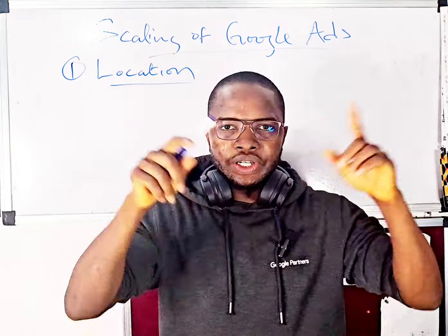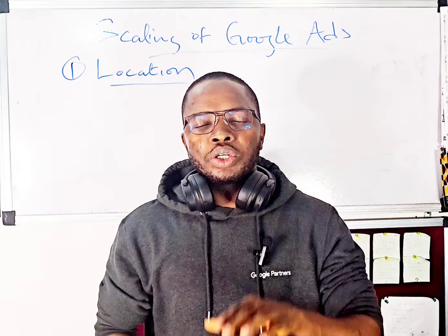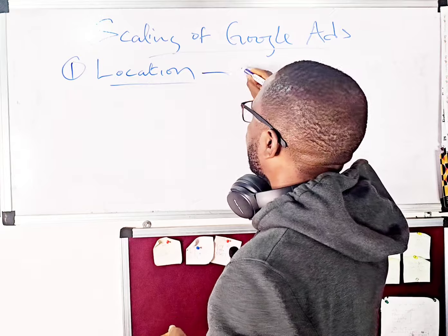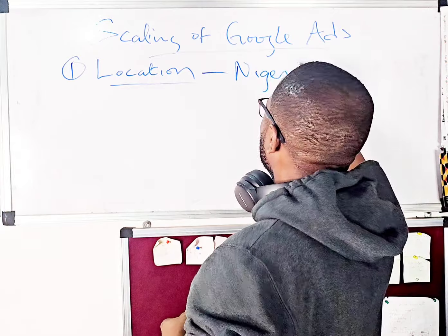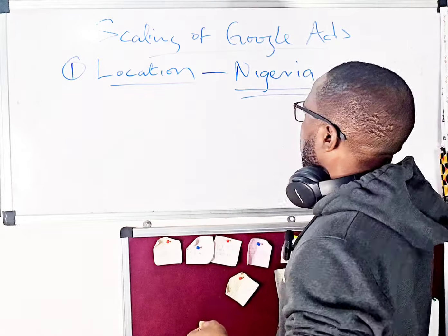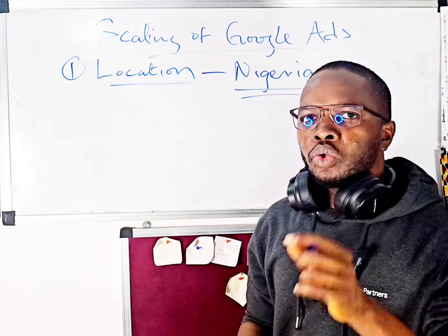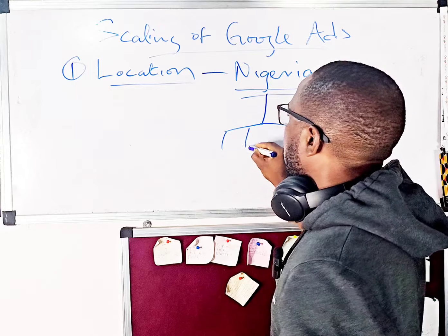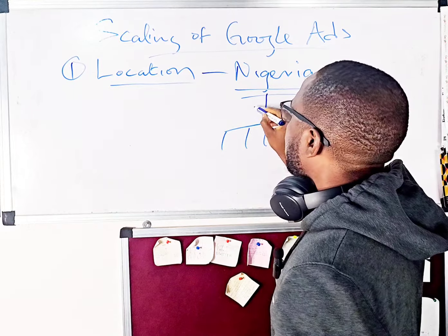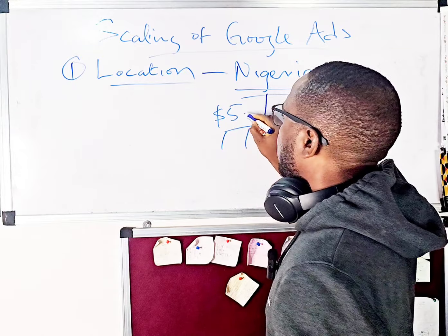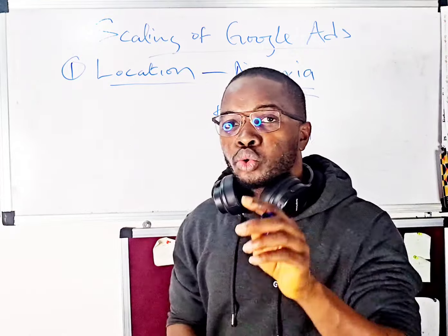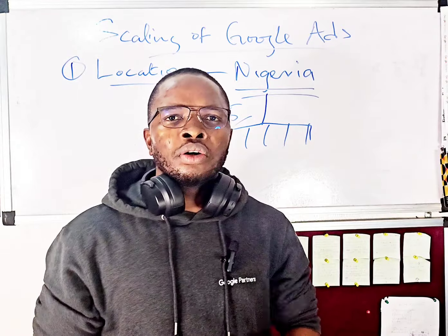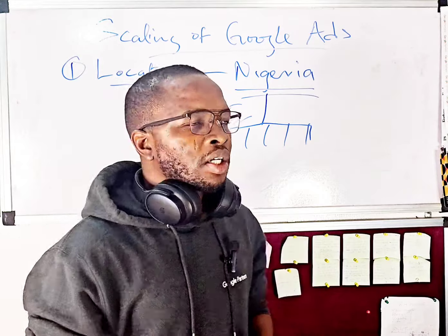Let's say you start advertising on Google and you decide to target Nigeria as a whole, and you set the budget as five dollars per day. When this advert starts running, you are delivering the advert to all 36 states in Nigeria — using just five dollars per day to serve your advertisement across 36 states.